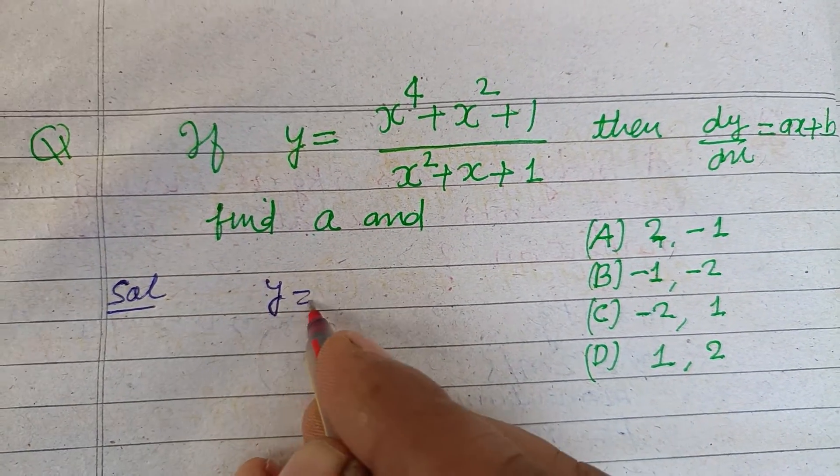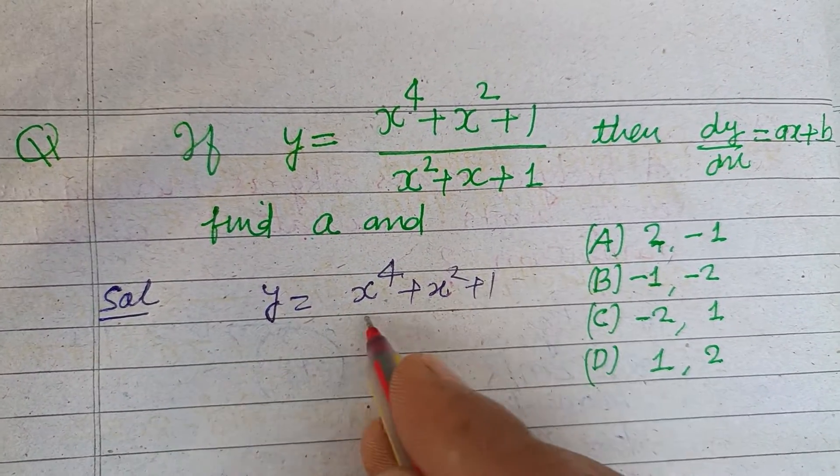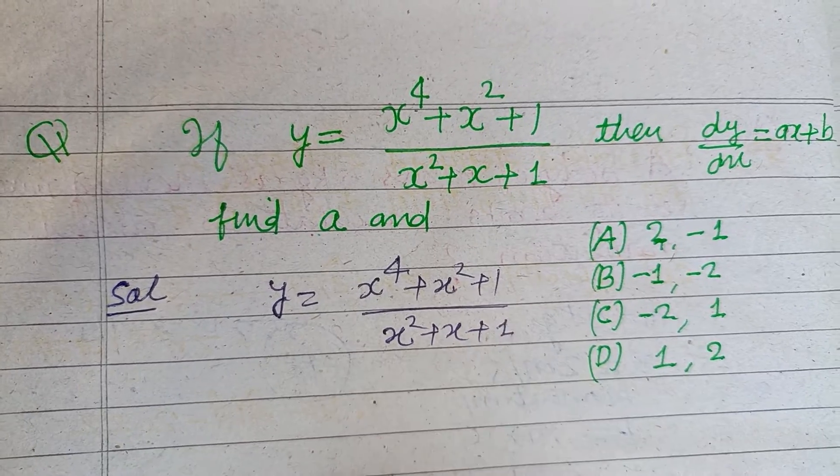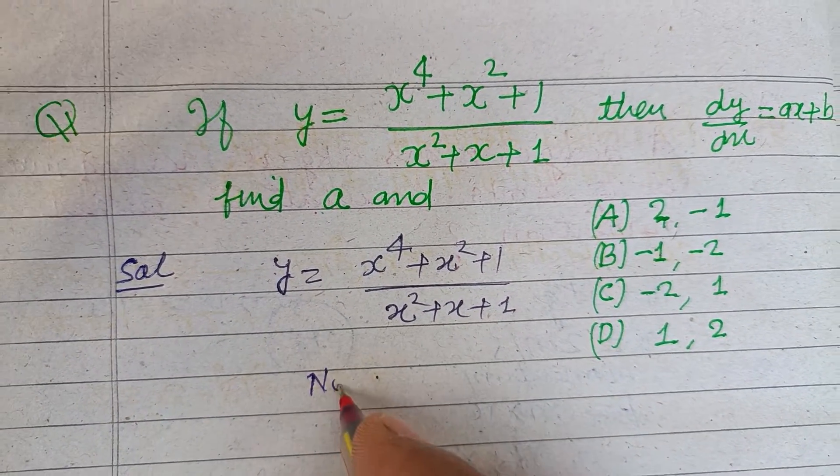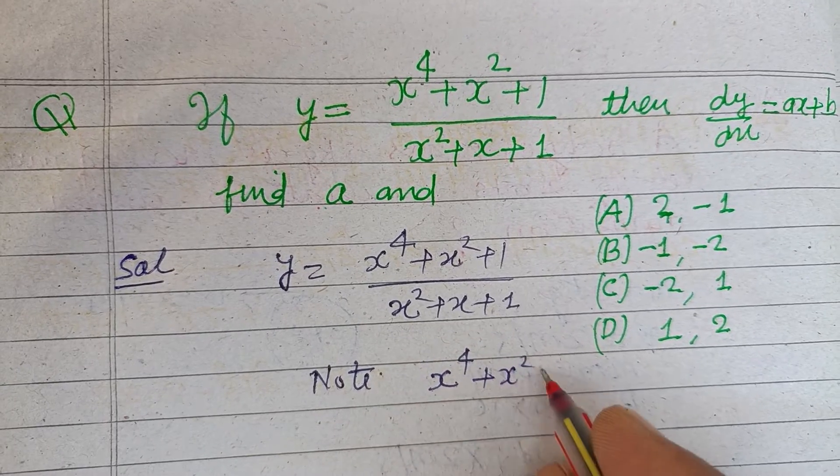Here y is given to us as x to the power 4 plus x squared plus 1 over x squared plus x plus 1. Note this point that the factor of x to the power 4 plus x squared plus 1, if we use the complete square method, then its factor will be x squared plus x plus 1 and x squared minus x plus 1.